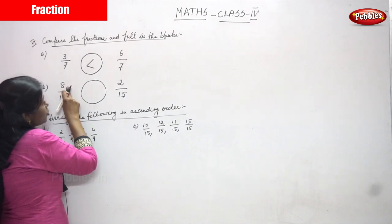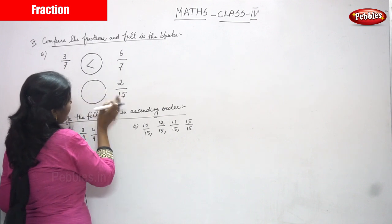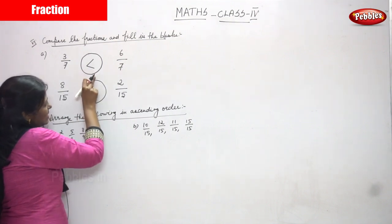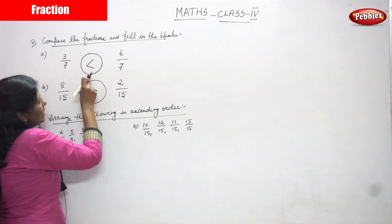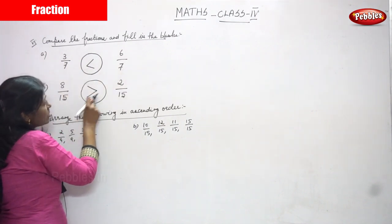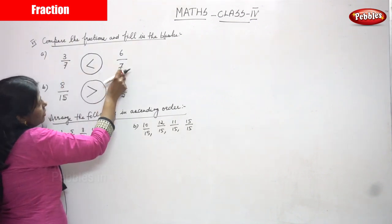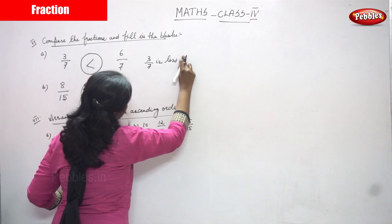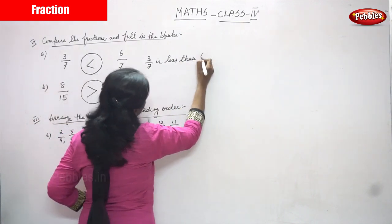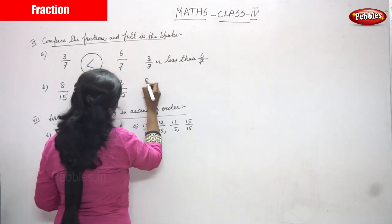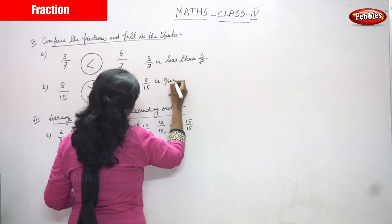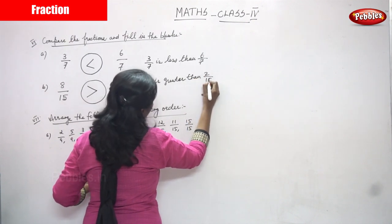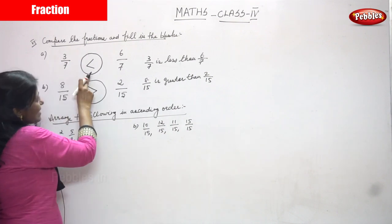In this fraction the numerator is 8, and in the other fraction the numerator is 2. Compare: 8 is a greater number. So you put the greater-than sign: 8 by 15 is greater than 2 by 15. To summarize: 3 by 7 is less than 6 by 7, and 8 by 15 is greater than 2 by 15.